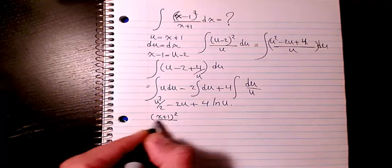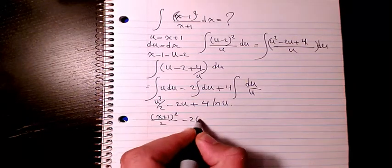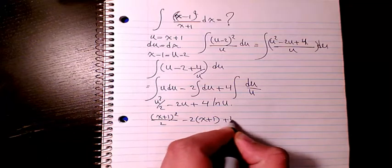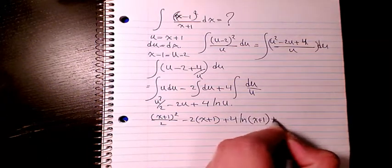(x+1)² divided by 2, minus 2(x+1), plus 4 ln(x+1) plus C.